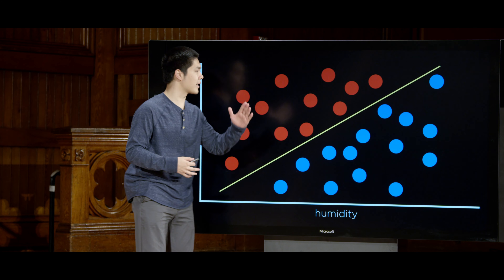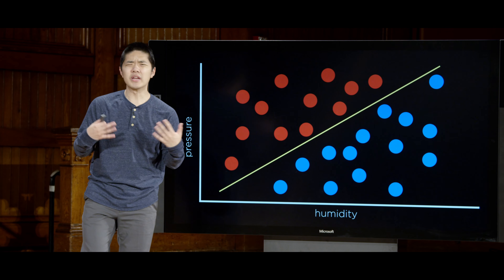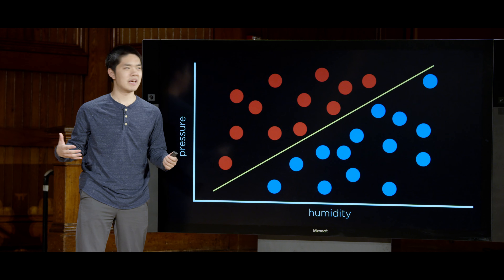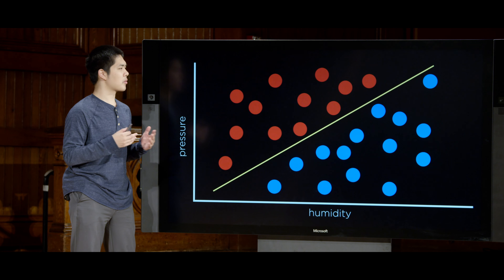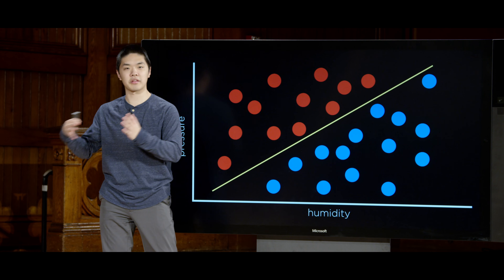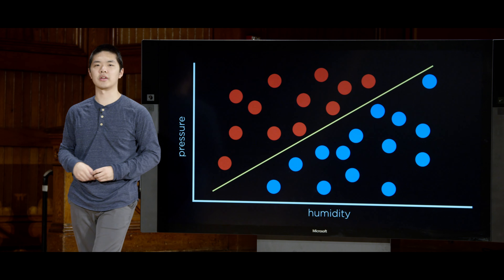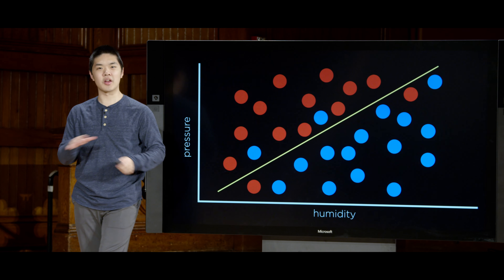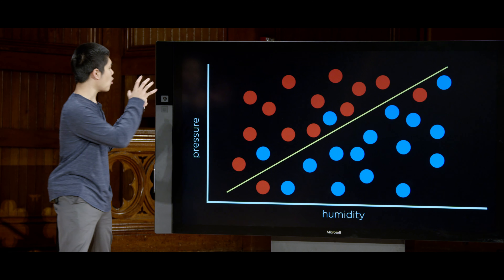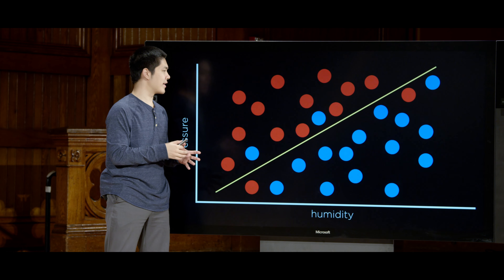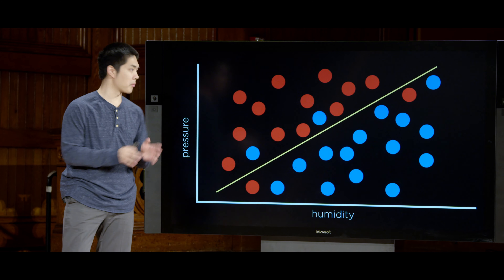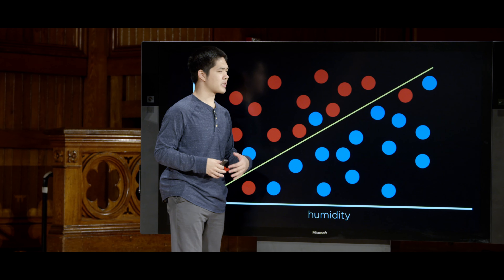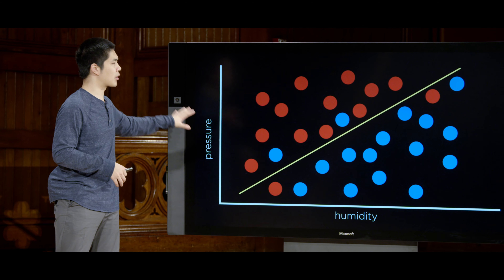We're now trying a different approach using a technique known as linear regression to find some line that separates the two halves. Sometimes it'll be possible to find a line that perfectly separates all rainy days from not rainy days. But realistically, data is often messy — there are outliers and random noise. In practice, the data will not always be linearly separable. Instead, you might have a situation where there are some rainy points on one side of the line and some not-rainy points on the other. But we can still say that a line does a pretty good job.